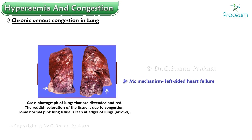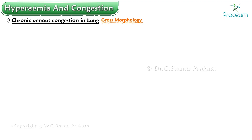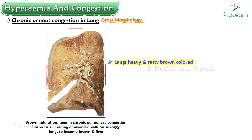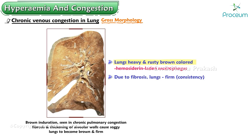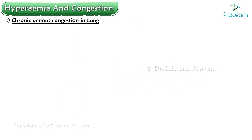The most common mechanism for chronic venous congestion in the lung is left-sided heart failure, which may be due to coronary heart disease or long-standing hypertension. Gross morphology: the lungs are heavy and rusty brown colored on cut section, due to hemosiderin-laden macrophages. Due to fibrosis, the lungs are firm in consistency — a combination that results in the name 'brown induration of the lung.'